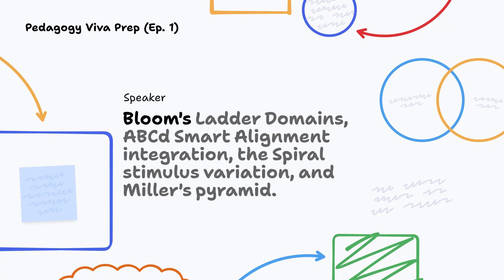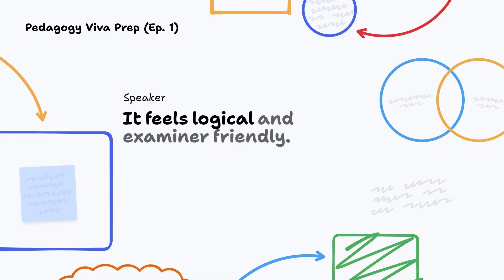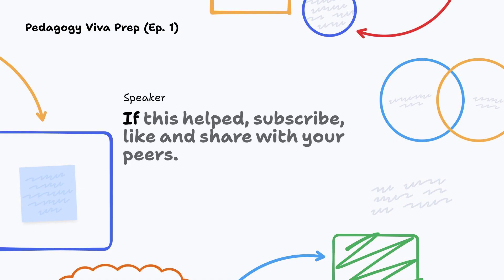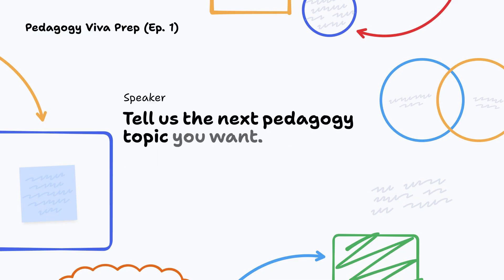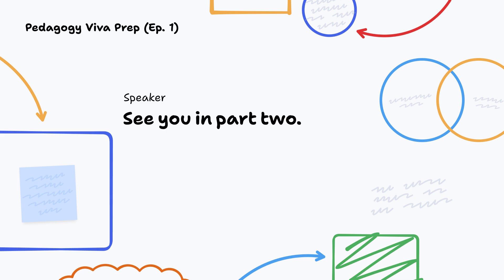That's your foundation: Bloom's ladder, domains, ABCD, SMART, alignment, integration, the spiral, stimulus variation and Miller's pyramid. Save this episode and rehearse with a friend. In your viva, speak in that sequence — it feels logical and examiner-friendly. If this helped, subscribe, like and share with your MD peers. Tell us the next pedagogy topic you want; your comment could shape the next episode. See you in part 2.